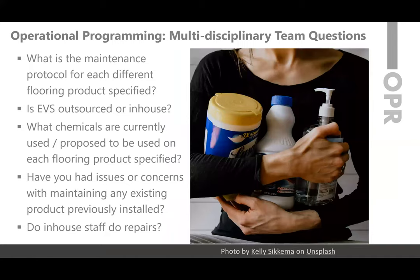Receiving information and having dialogue with environmental services technicians and management is also critical. If flooring types are specified that differ from those currently installed, or there isn't familiarity with maintenance processes for different types of resilient flooring, it's important to discuss and verify that different maintenance needs can be met. For example, VCT differs from vinyl sheet, cork, or rubber flooring in cleaning and disinfection. From a repair perspective, some materials may be easier to complete in-house, and previous product issues should be understood so they can be solved.